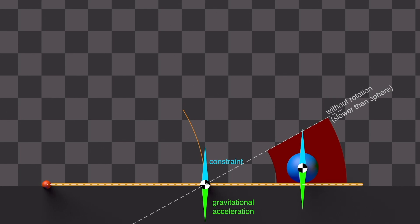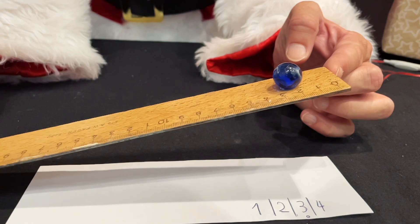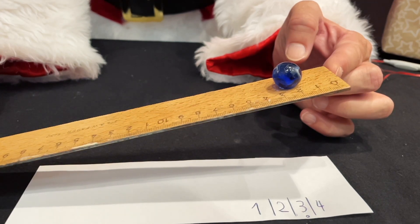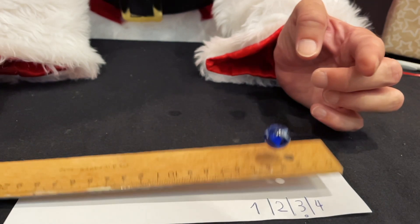As a result, the upper end of the ruler moves more slowly at the beginning of the movement than in free fall. Towards the end of the movement, the ruler has an almost horizontal orientation. It moves almost in free fall.